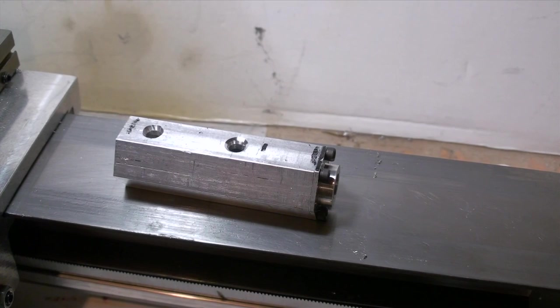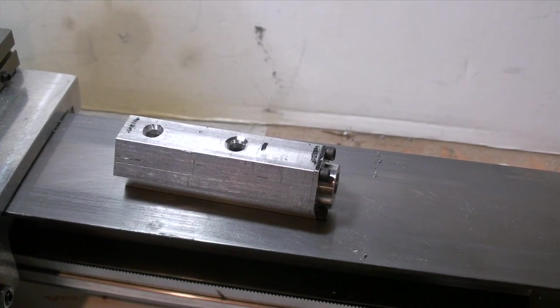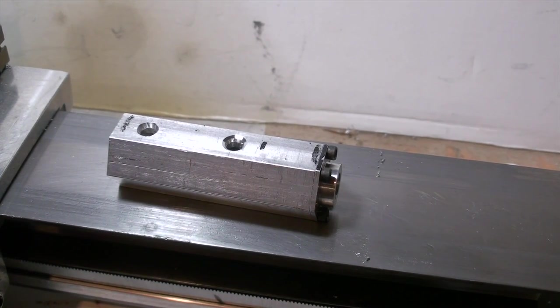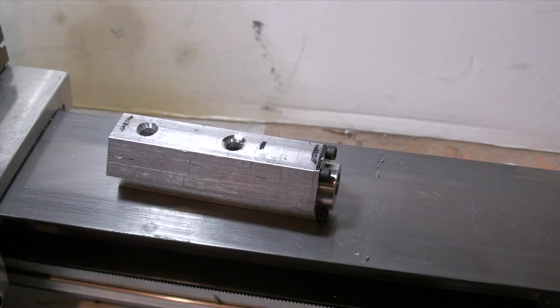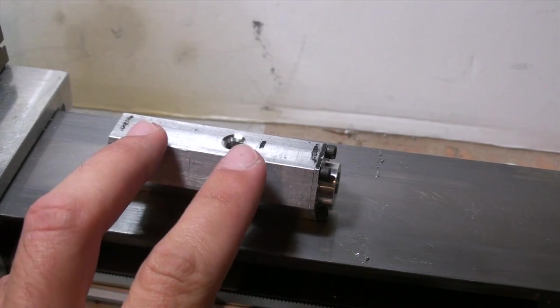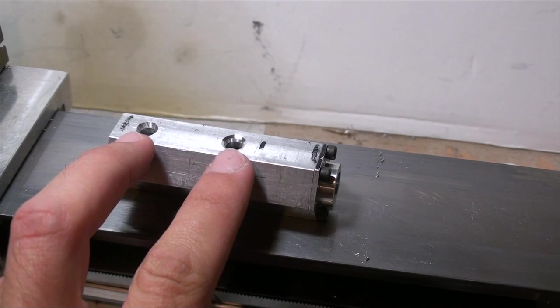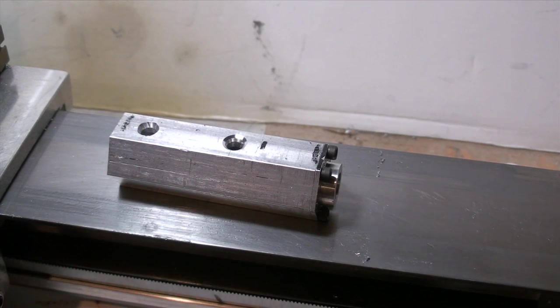So the engine I'm trying to make right now is an inline twin. The pistons are 180 degrees apart and you can see where the two pistons, the cylinders will be, so let me show you that.